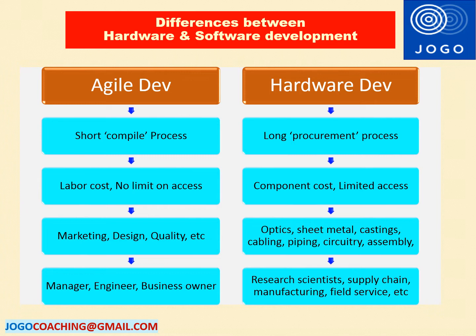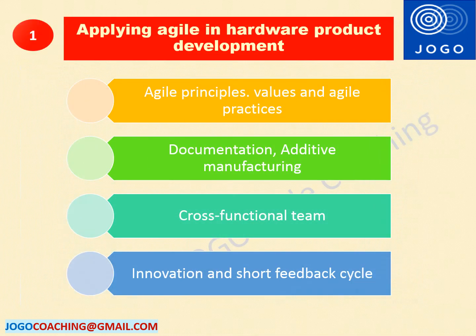The best way to apply Agile in hardware product development is following the Agile principles, values, and practices in each and every activity of product development. We can apply the first Agile value of individuals and interaction over process and tools. In order to address increasing complexity, a good framework of process and tools will help keep everyone on the same page. Frequent communication and interaction should be considered to handle the complex work environment.